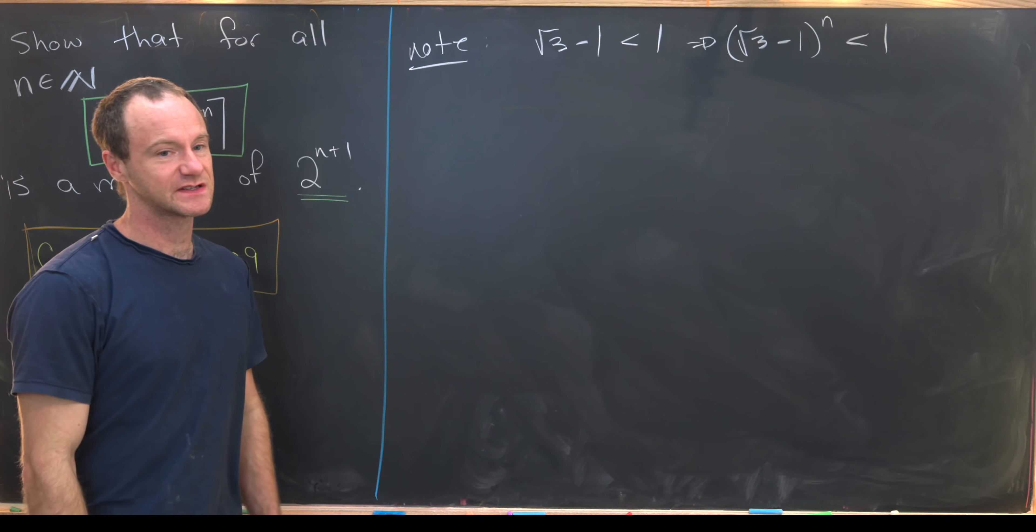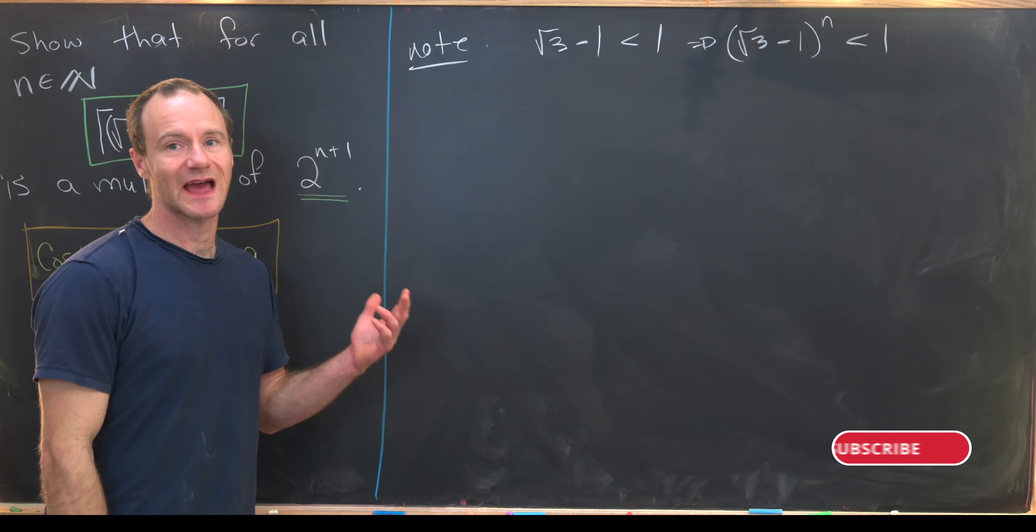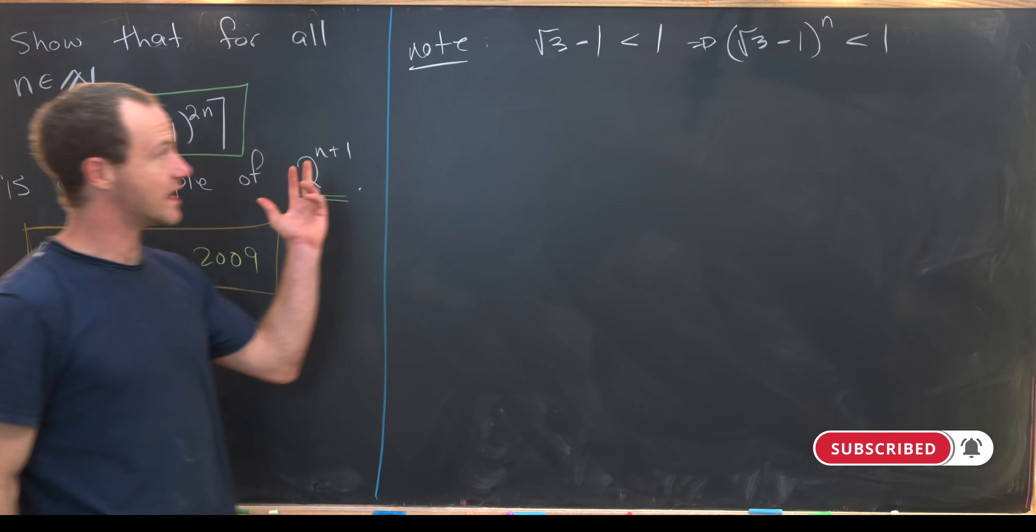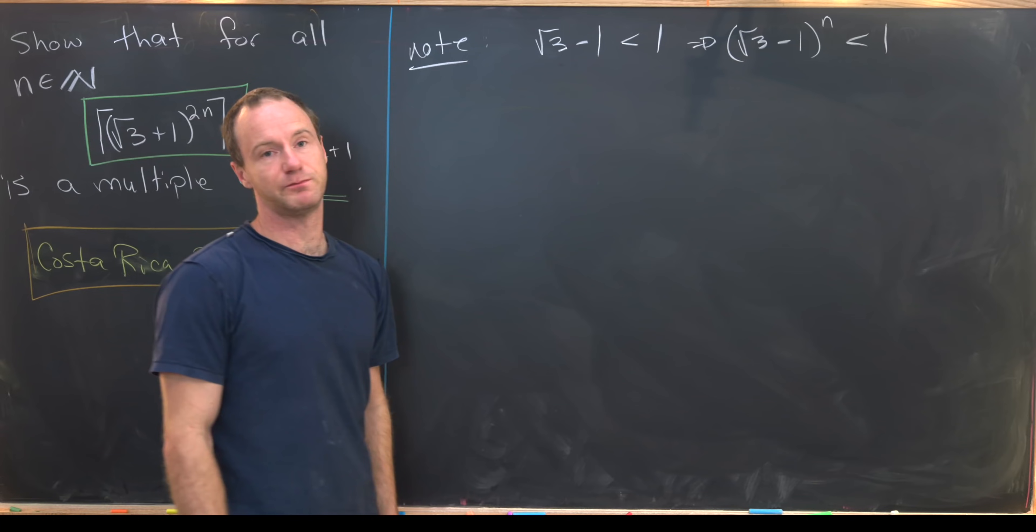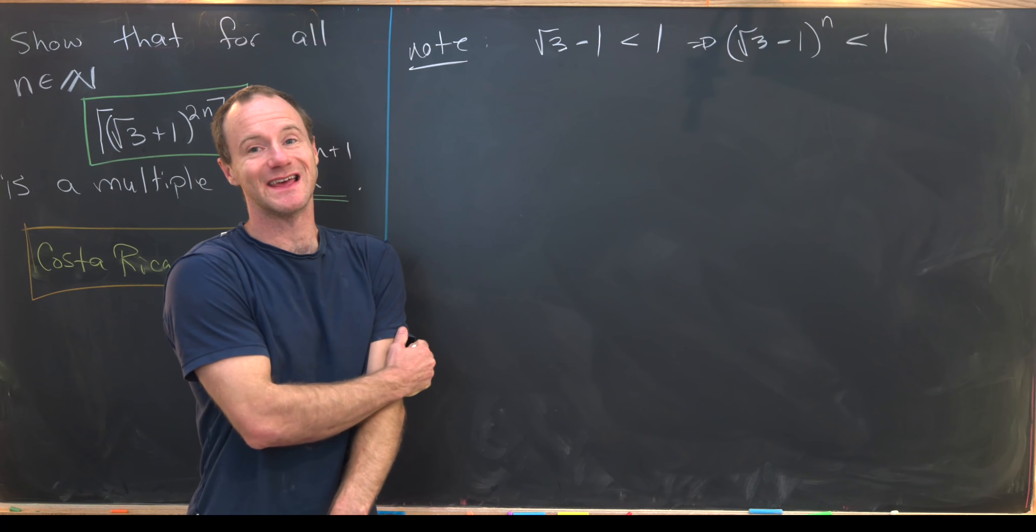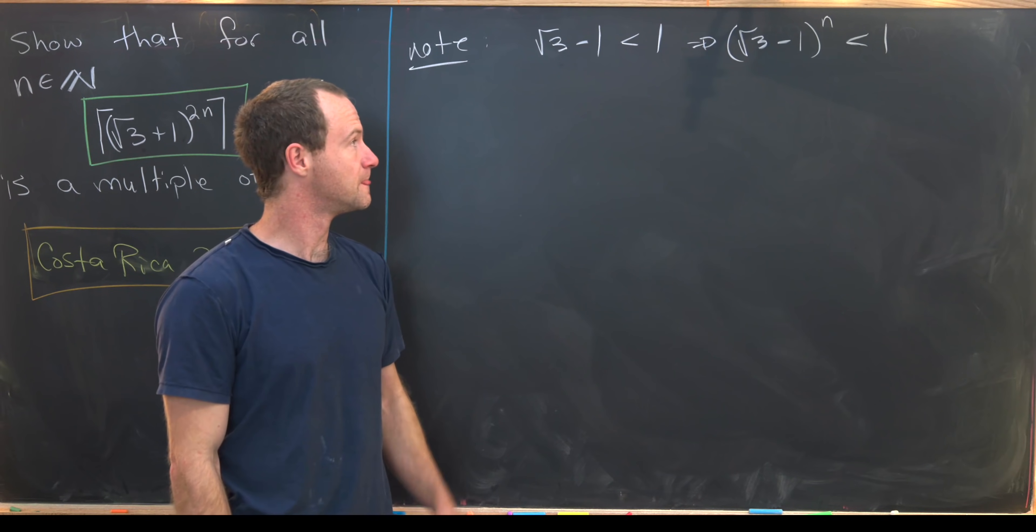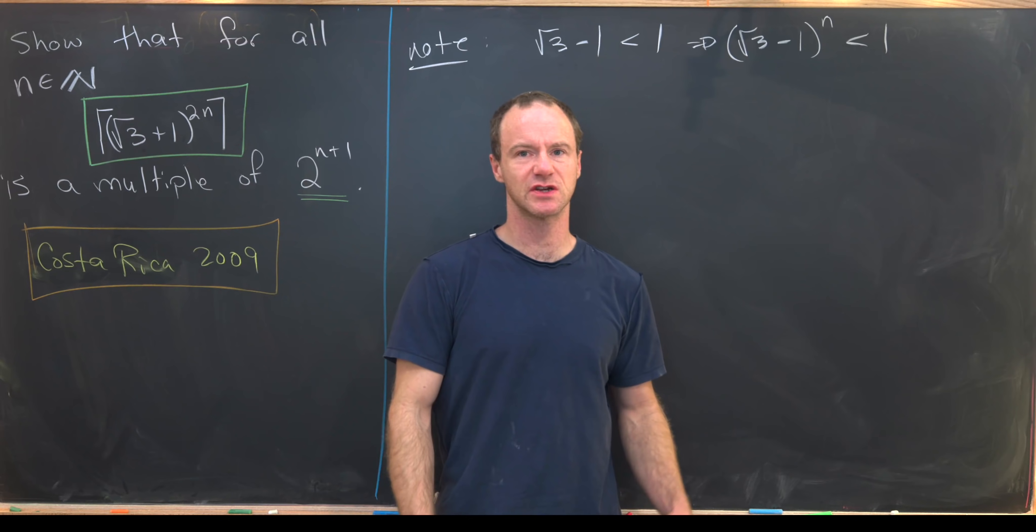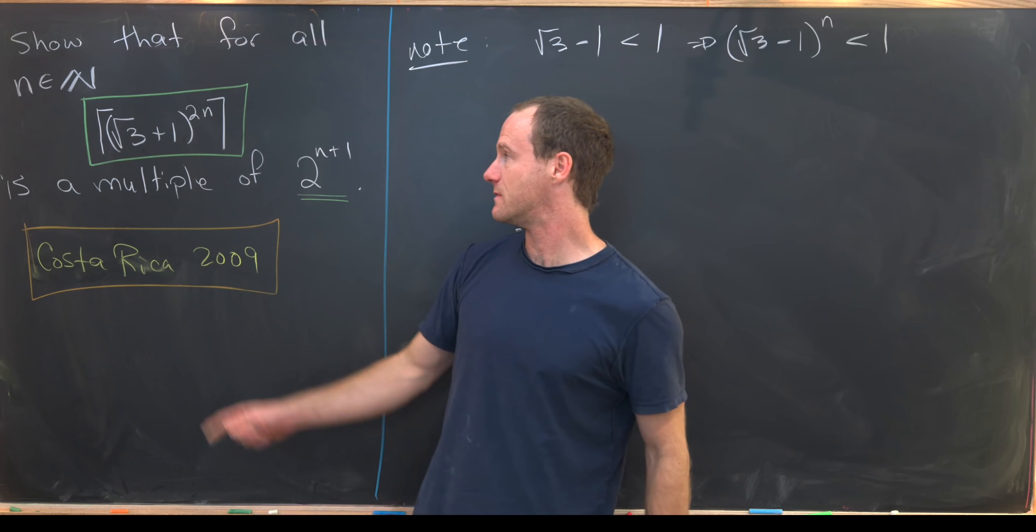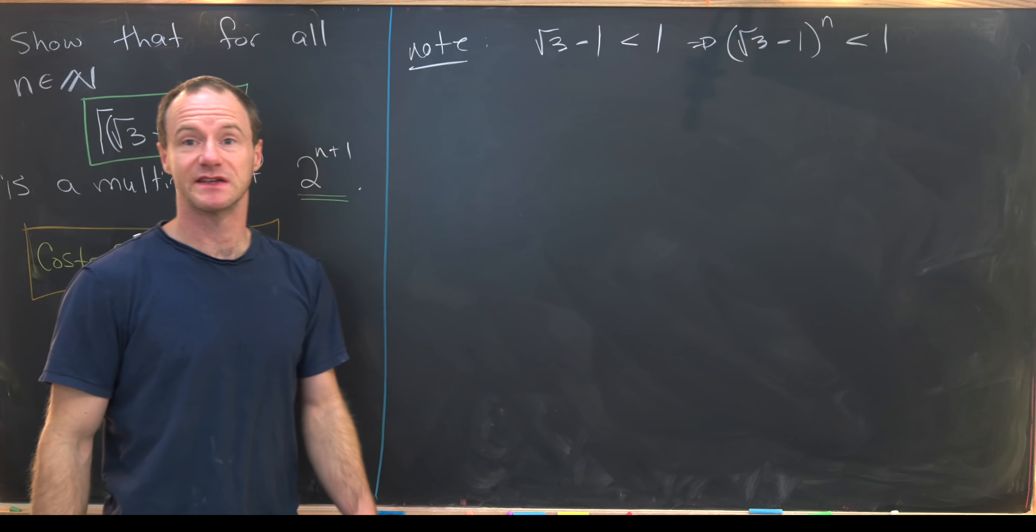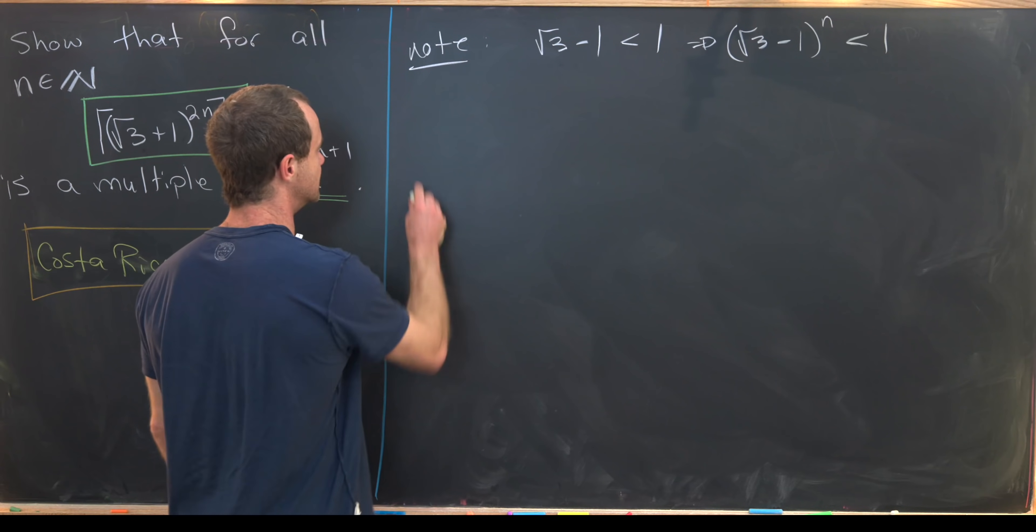And that gives us some motivation to look at the following combination of this guy with kind of its cousin. So the fact that root 3 minus 1 to the n is less than 1 coupled with the fact that we're looking for the ceiling of this object really gives us some motivation that maybe we should look at the sum of something like this and something like this. And that's exactly what we'll do.